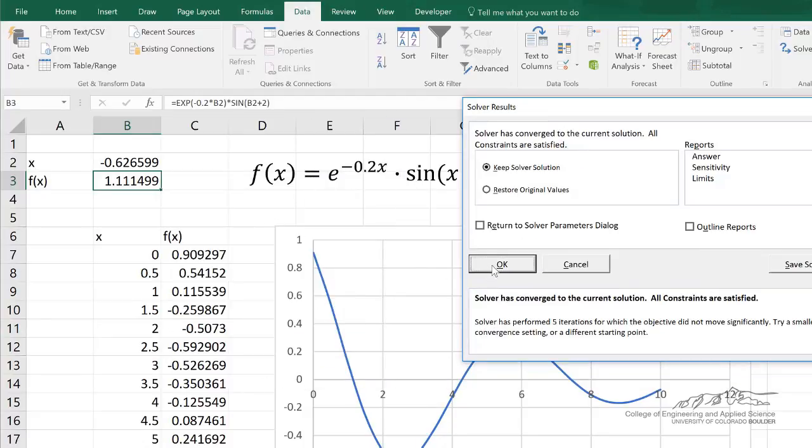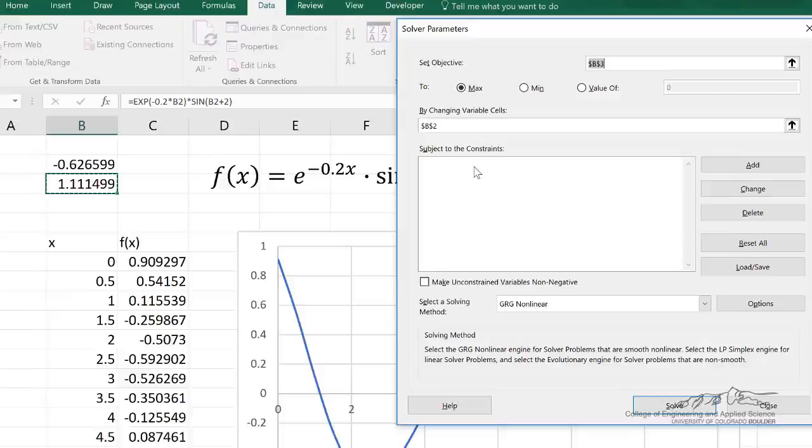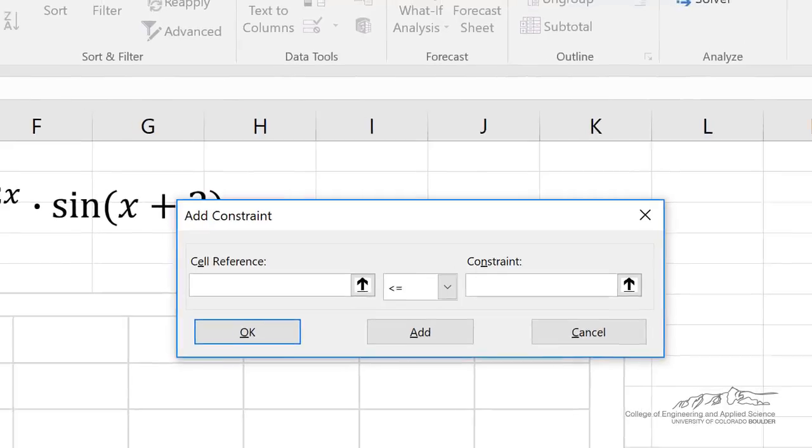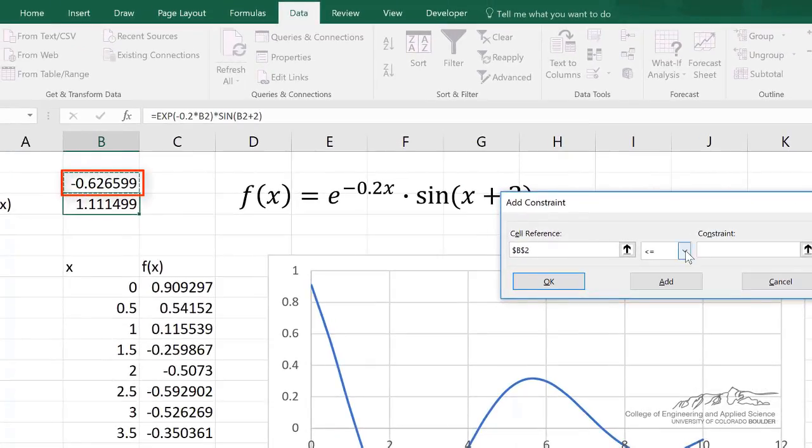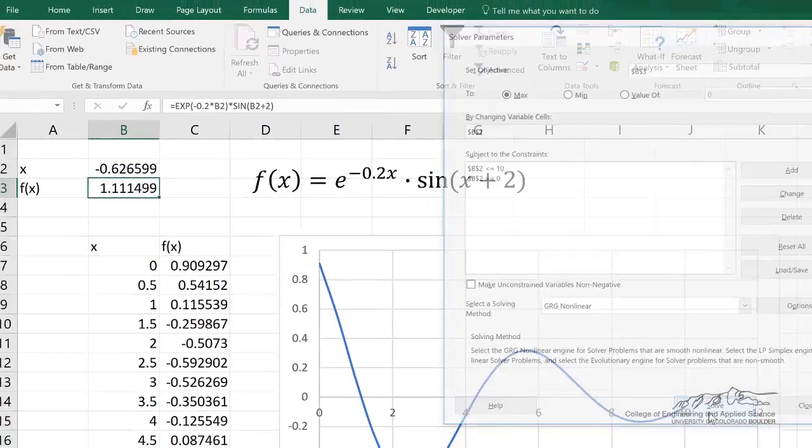Now if we wanted to force a certain domain into our solver box, I can go into solver and this is where we can add in our constraints. So I can click on add. We want to make it such that B2 has to be less than or equal to 10. So I can click add. And then my B2 also has to be greater than or equal to 0.